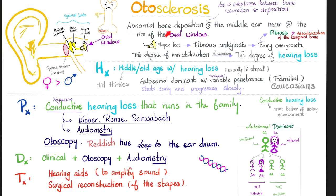Otosclerosis is abnormal bony deposition in the middle ear, specifically near the rim of the oval window, and more specifically near the foot process of the stapes. Why do we have too much bone deposition? Probably due to an imbalance between bone resorption — breakdown — and bone deposition — laying down. The buildup and the breakdown are not in sync. This leads to fibrous ankylosis, meaning fusion of the stapes foot process, then bony overgrowth, then fibrosis and vascularization of the temporal bone — and then nothing moves. This degree of immobilization determines the degree of conductive hearing loss.